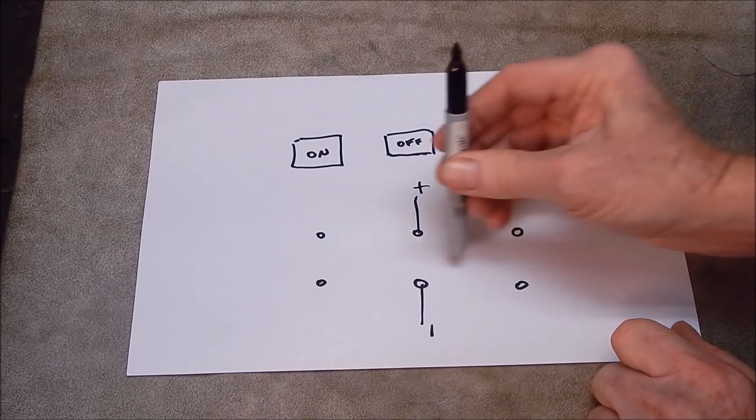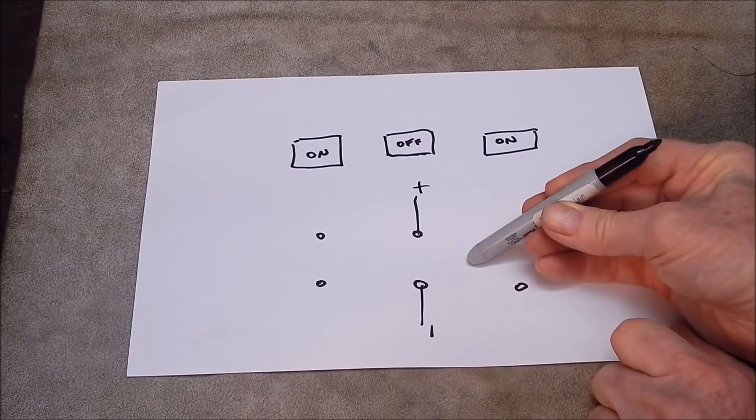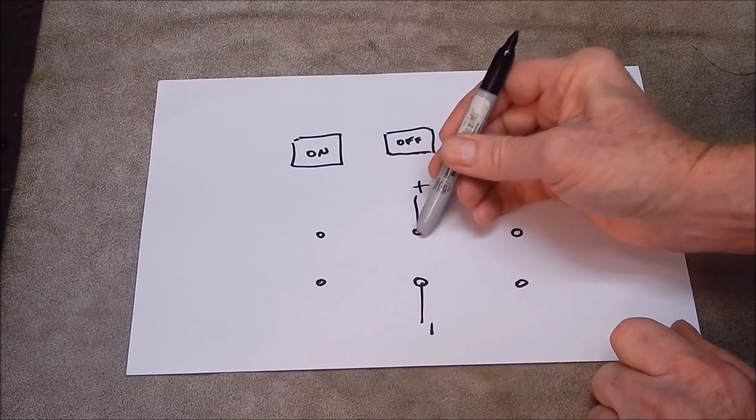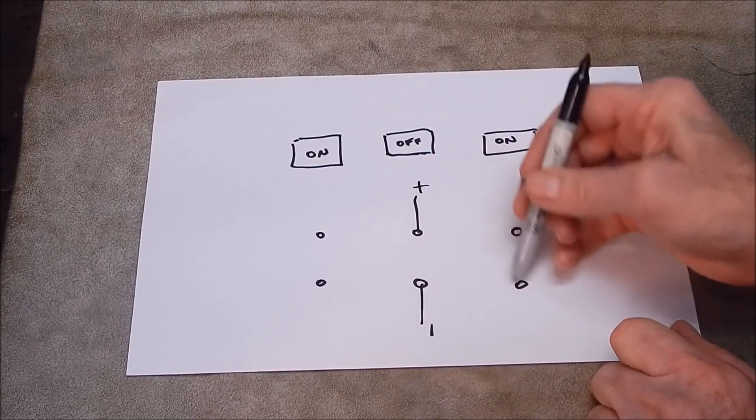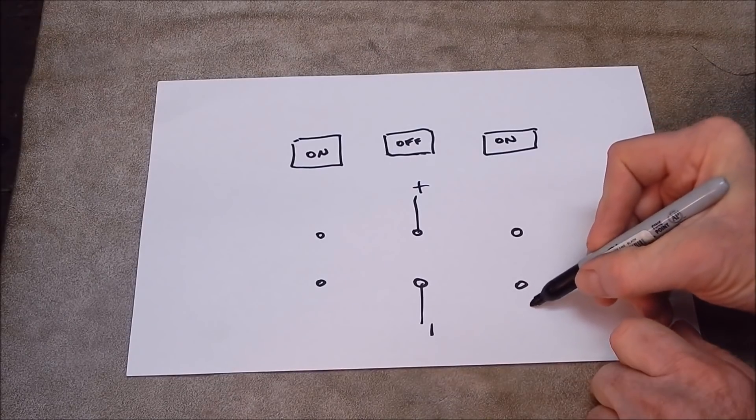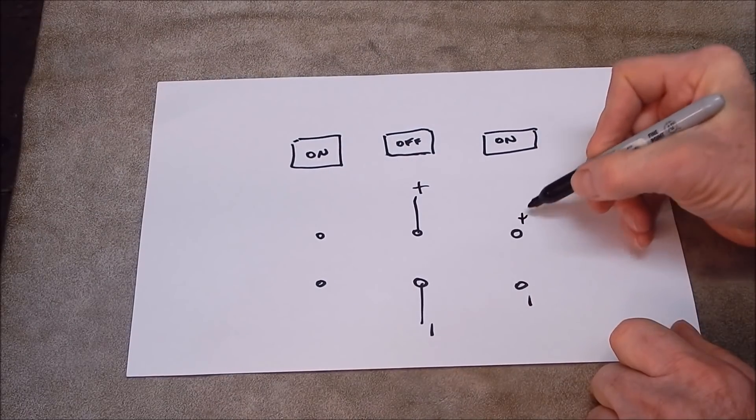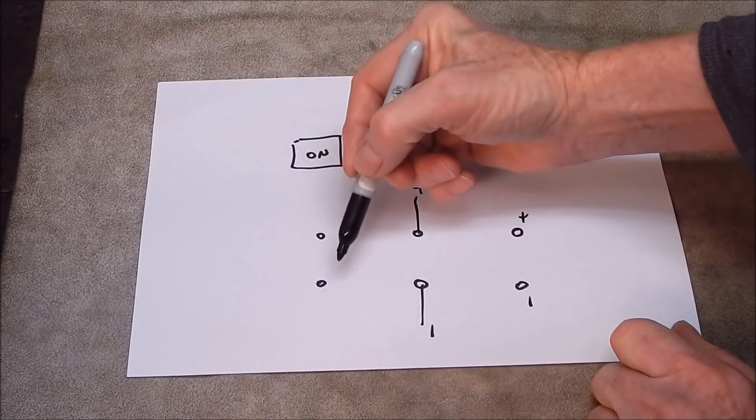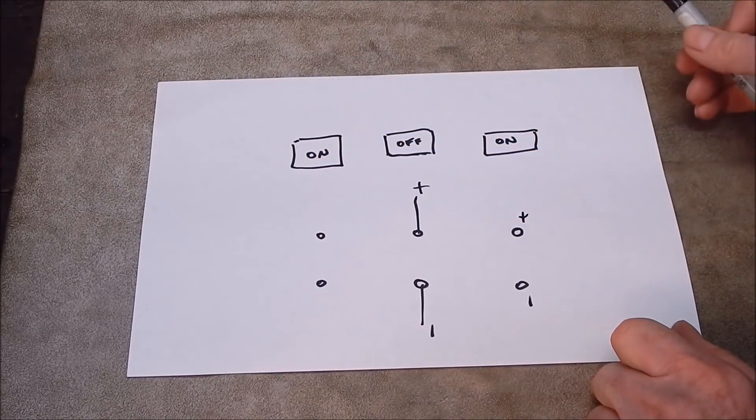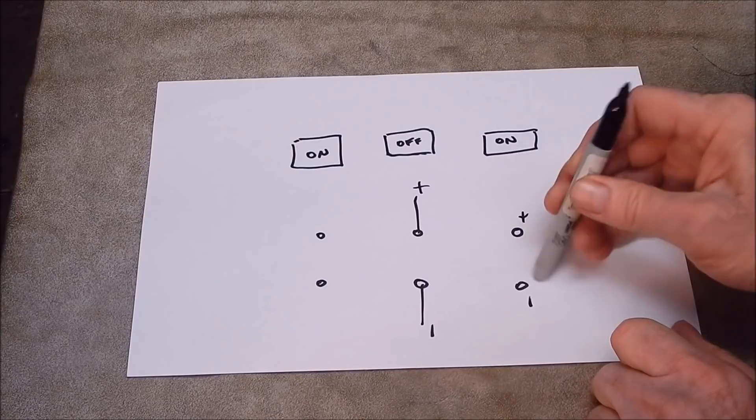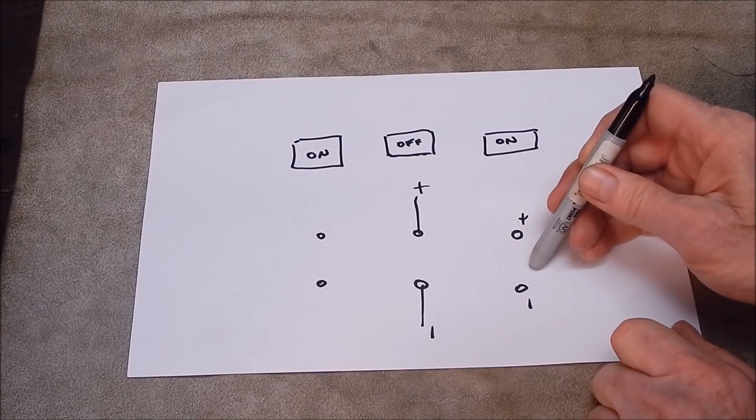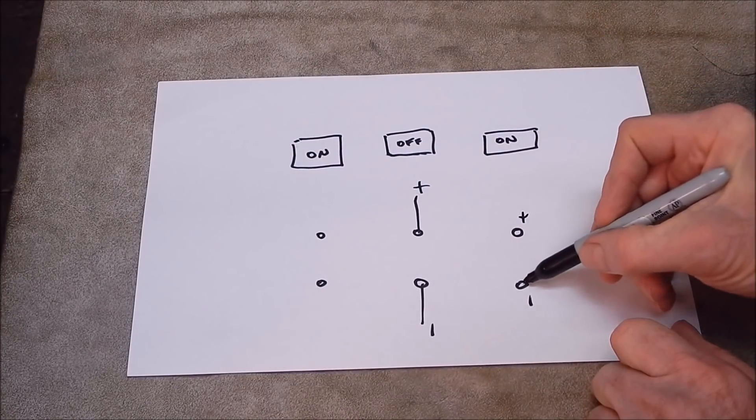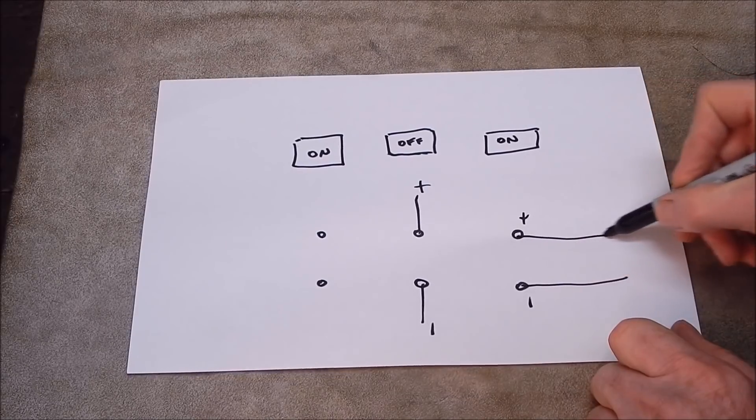If you toggle the switch over this way, this bridges with that, this bridges with that, so this becomes negative, this becomes positive. If you flick it back that way, the same thing happens. That's negative, that's positive. But you can only connect your motor up to one set of terminals, so we'll connect it up to these. These are the wires that go to your motor.